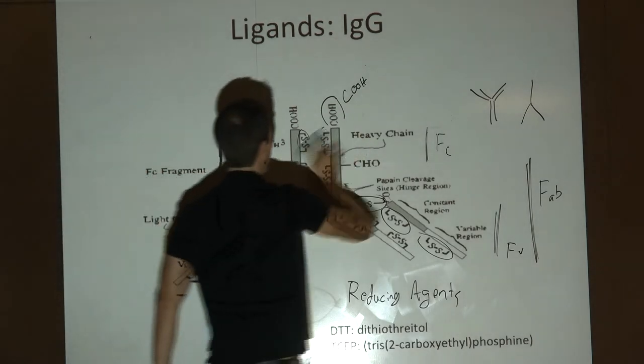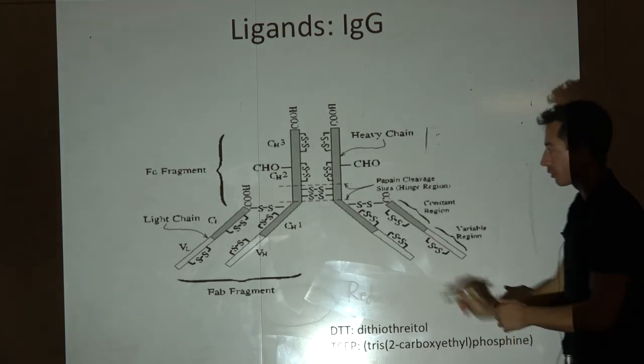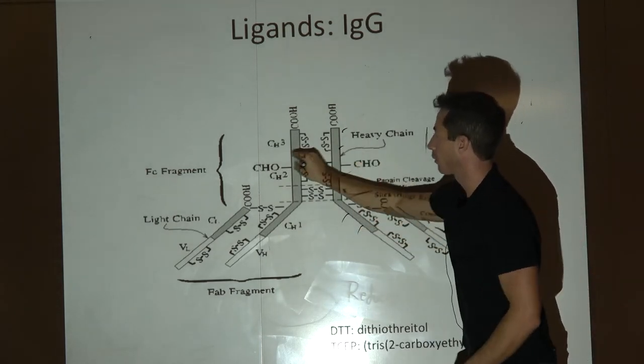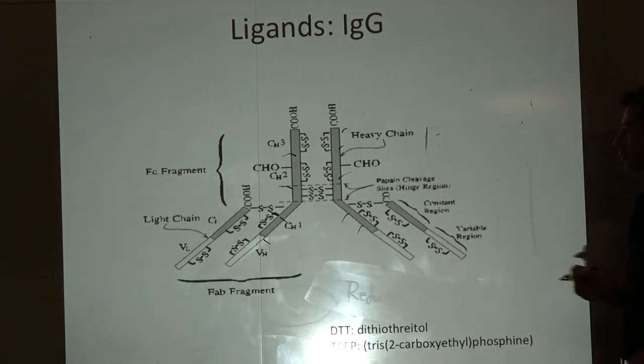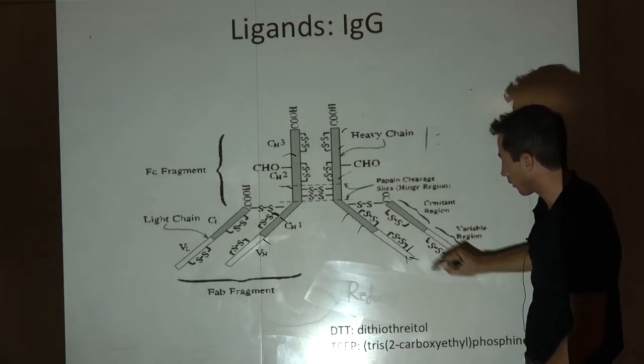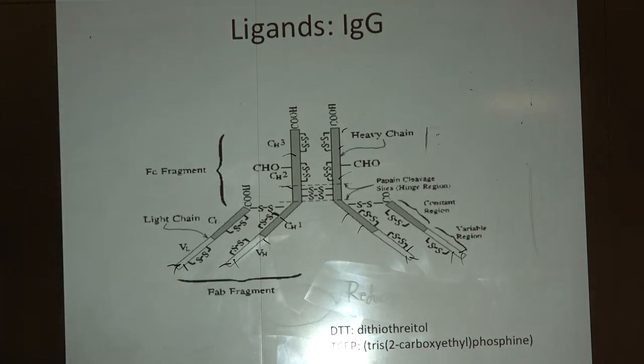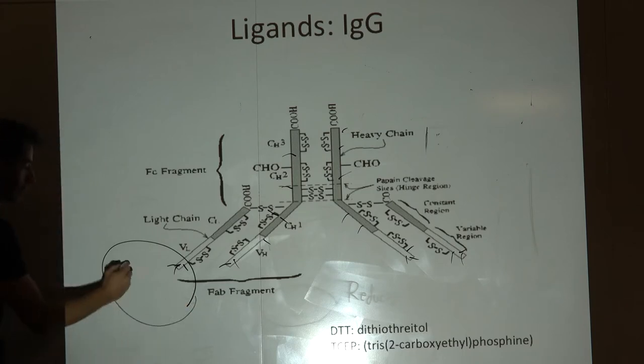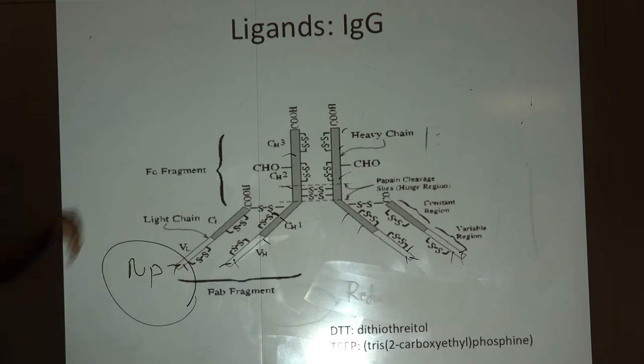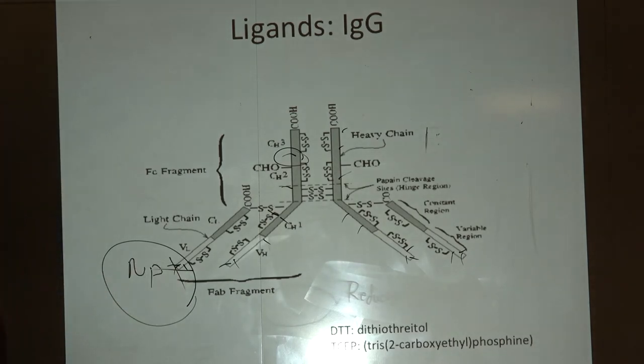You might be thinking, where are the amines? Just because they're not shown on this sequence doesn't mean there's not amines everywhere. One issue is there can be amines in our binding pocket. If your nanoparticle labels through this amine, how good do you think it's going to be at recognizing the antigen? Bad, because you're conjugated through the binding site.